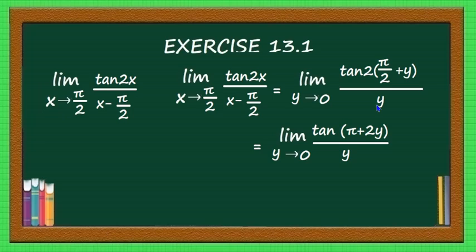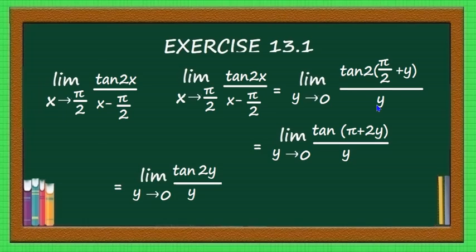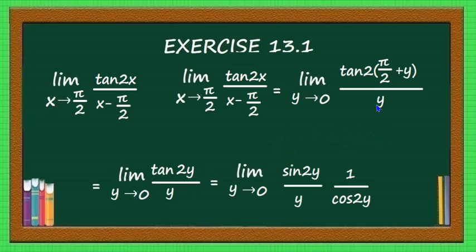Writing tan(2y) as sin(2y)/cos(2y), the expression becomes limit y→0 of [sin(2y)/y] times [1/cos(2y)]. Grouping sin(2y)/y as the standard limit part and 1/cos(2y) separately.